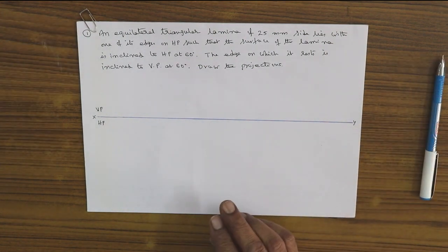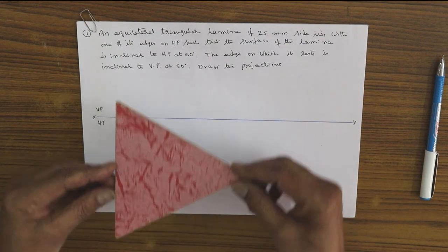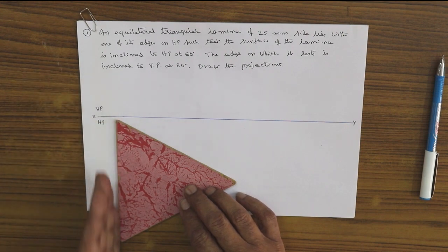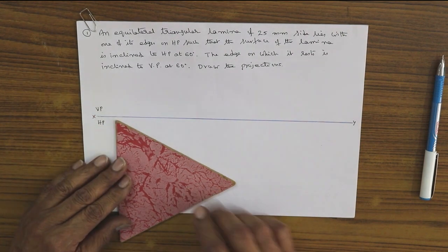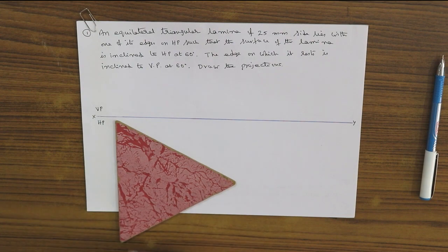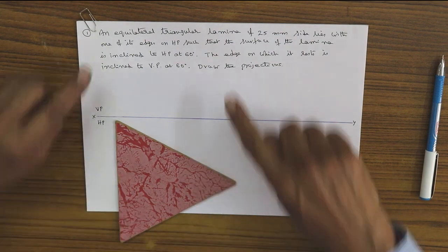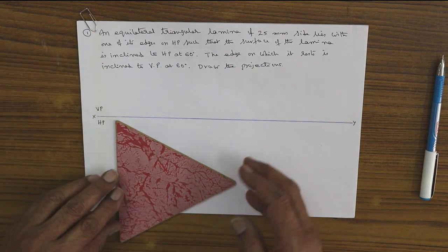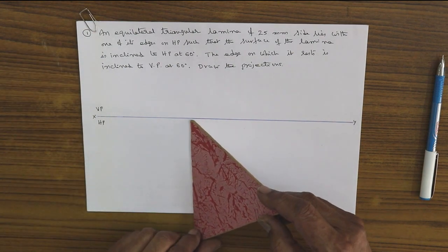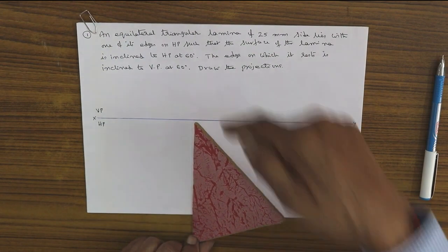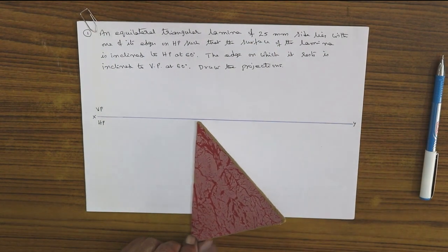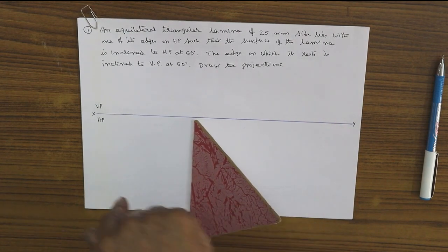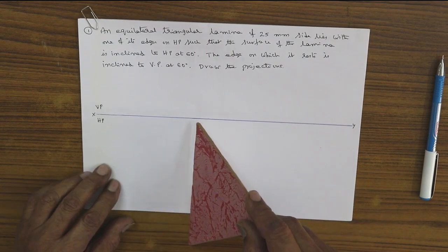The answer goes by the change of position method. Initially, keep the lamina with one of the edges perpendicular to the XY line and draw the top view and front view. This is the initial position. When the surface is inclined to HP, start the figure in HP. The first step: make the surface inclined to HP at 60 degrees. The front view will be a line in the VP, but the top view will be a smaller apparent triangle. The lamina is standing on the side.